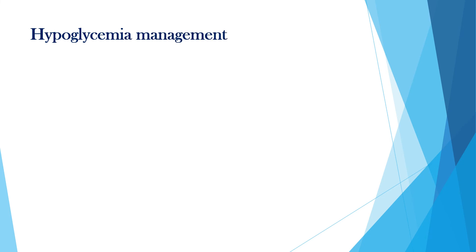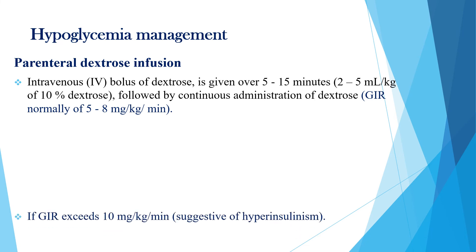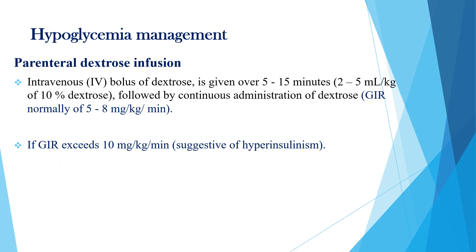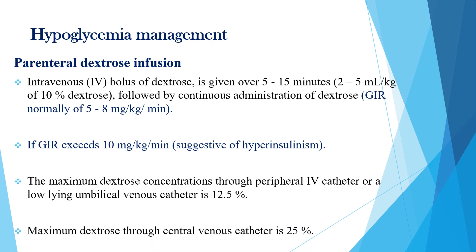Regarding management of hypoglycemia, intravenous bolus of dextrose is given over 5 to 15 minutes — 2 to 5 ml/kg of 10% dextrose — followed by continuous administration of dextrose with a glucose infusion rate normally of 5 to 8 mg/kg/minute. If glucose infusion rate exceeds 10 mg/kg/minute, it suggests hyperinsulinism. The maximum dextrose concentration through a peripheral IV catheter or umbilical venous catheter is 12.5%, and through a central venous catheter is around 25%.